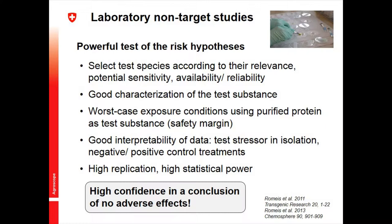Data interpretation is relatively easy because you only look at your stressor. Every effect in a good lab assay can be linked back to this stressor and nothing else. Negative and positive control treatments help interpret those data. Working in controlled lab systems, we can do a high number of replications, which adds statistical power. Overall, if a study is done properly and you don't see an effect, you have very high confidence that the toxin is not toxic to that particular non-target organism.